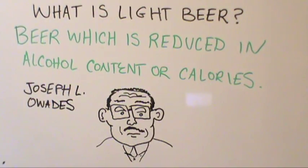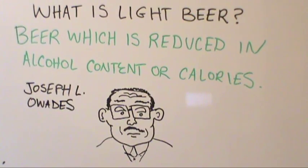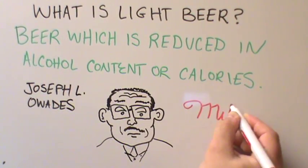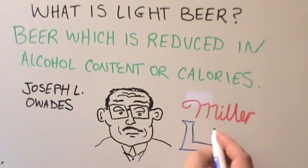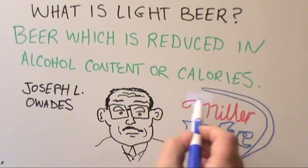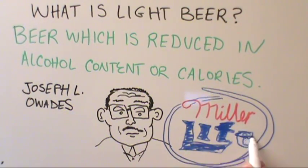This process basically reduced the carbs and calories from beer. Miller Brewing Company acquired the light beer process in 1970. Miller Lite was introduced nationally in 1975.